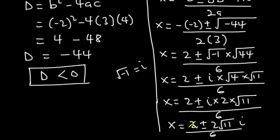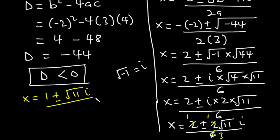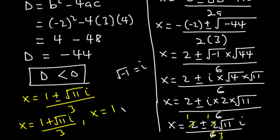Simplifying by dividing numerator and denominator by 2, we get x equals 1 plus or minus root 11 i, divided by 3. The first solution is x equals 1 plus root 11 i divided by 3, and the second solution is x equals 1 minus root 11 i divided by 3. These are the two imaginary or complex roots of this quadratic equation.